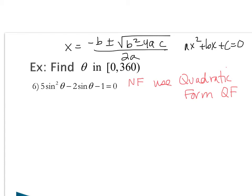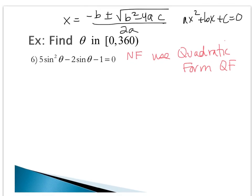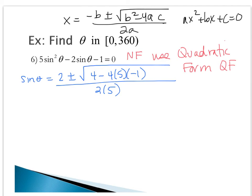If we look at example 6, my variable is actually sine theta. When I get my solutions from quadratic formula, they're going to equal sine theta. Sine of theta equals the opposite of b, positive 2 plus or minus square root, b squared 4 minus 4 times 5 times negative 1, all over 2 times 5. We end up getting two answers for sine of theta: 0.6899 or negative 0.2899.